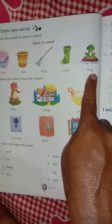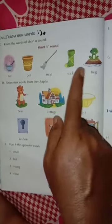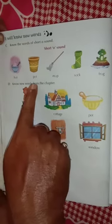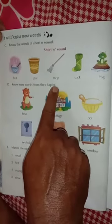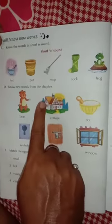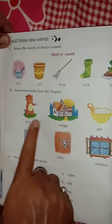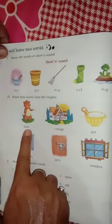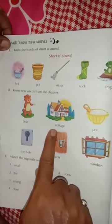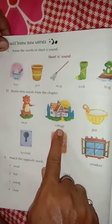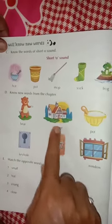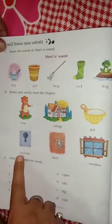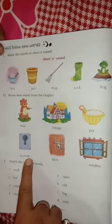As like this, you have to read. Question number D, know new words from the chapter. You have to look carefully at these pictures and read. Bear. Bear. Cottage. C-O-T-T-A-G-E. Cottage. Pot. Pot. Pot.